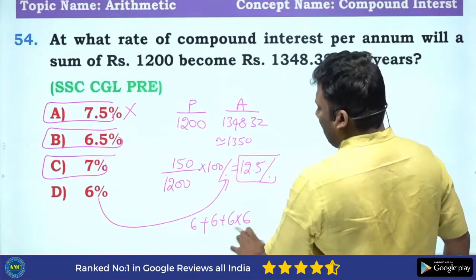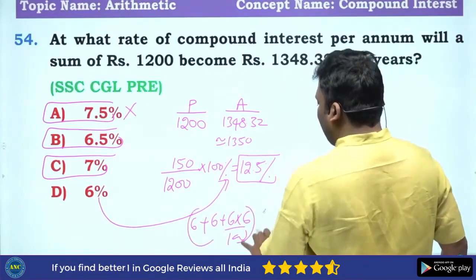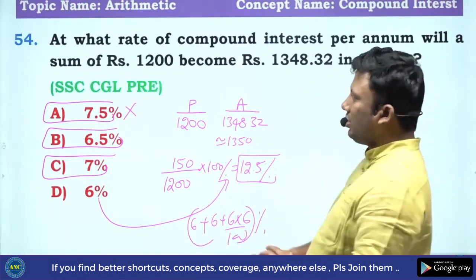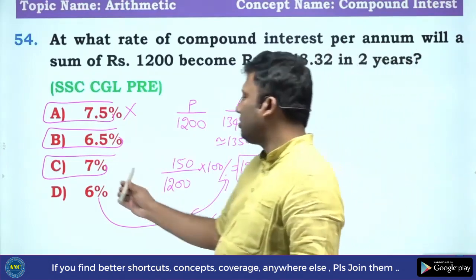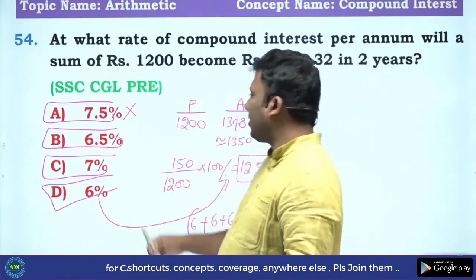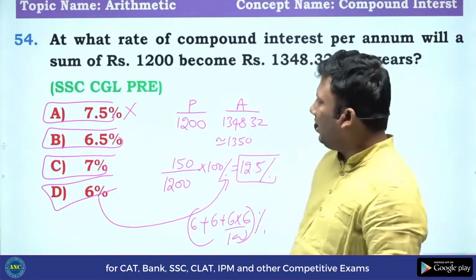Using the formula A plus B plus A into B by 100, the answer is 6%. I hope that is clear.